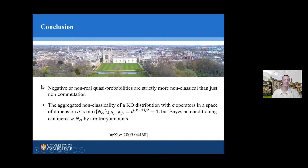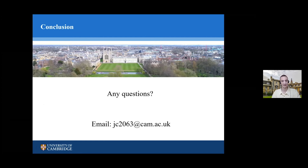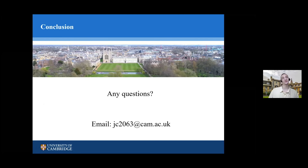The takeaway of this talk is: negative or non-real KD probabilities are strictly more non-classical than just non-commutation. We gave a condition which describes exactly when non-classicality happens. Thanks for listening — if you think of any questions after the talk, my email is there.